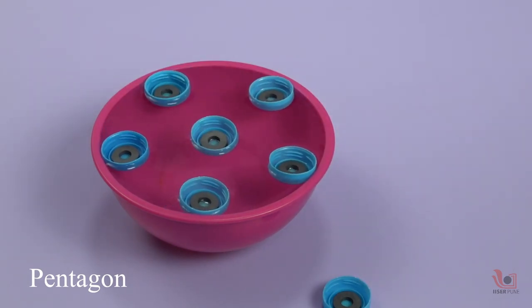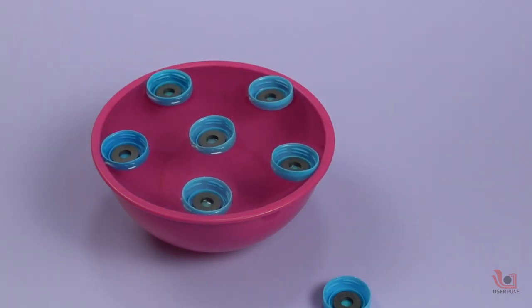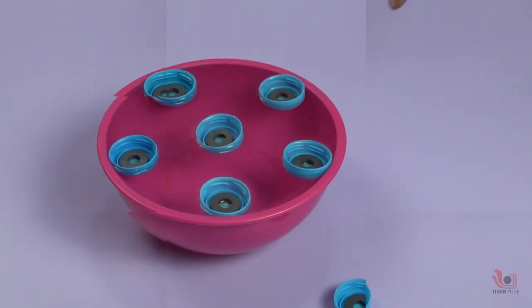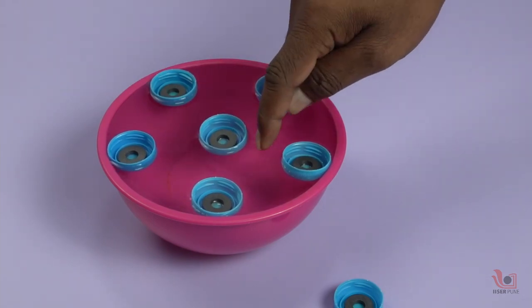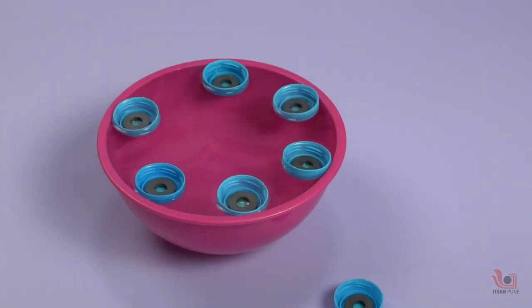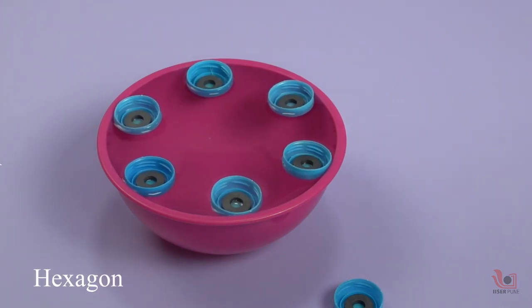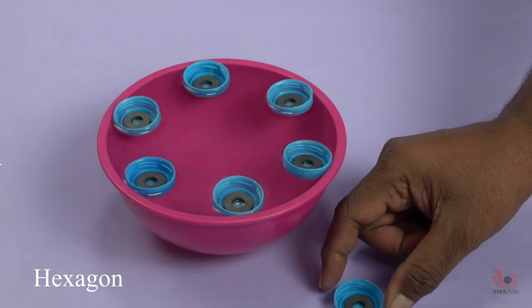When you place the sixth magnet in the center of the bowl, you will find the pentagon with a center. If you provide a little push to the central magnet, it goes to the periphery and forms a nice hexagon.